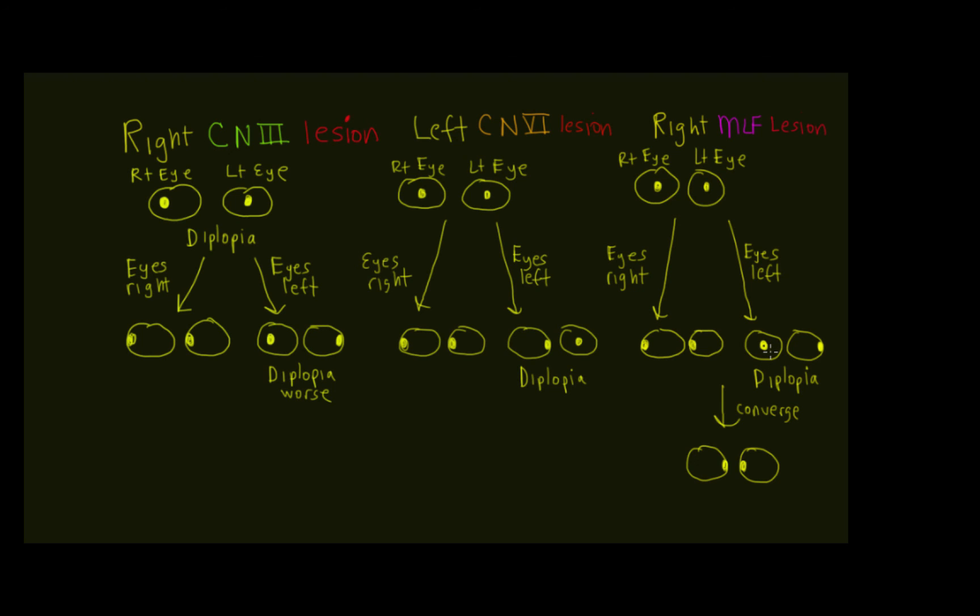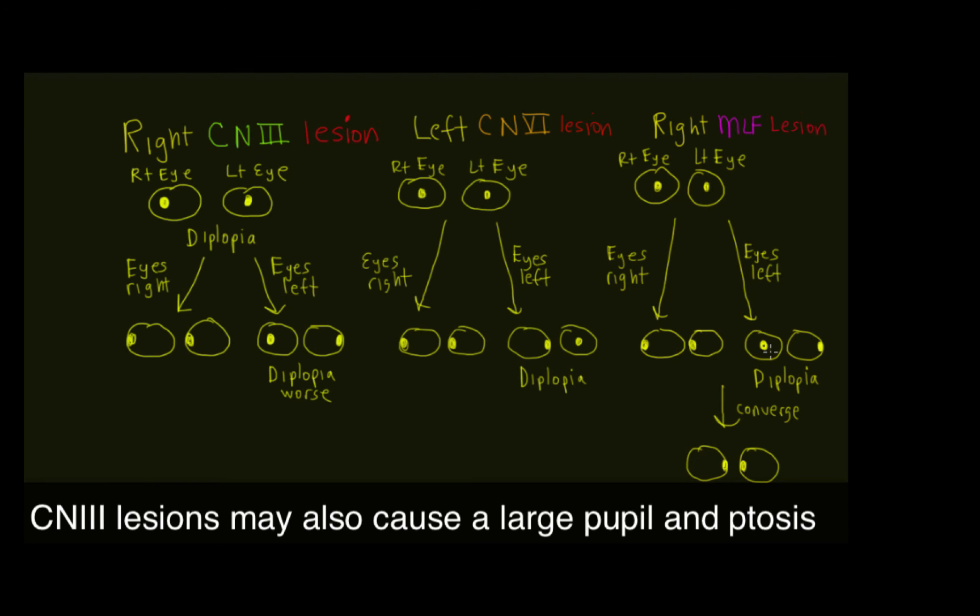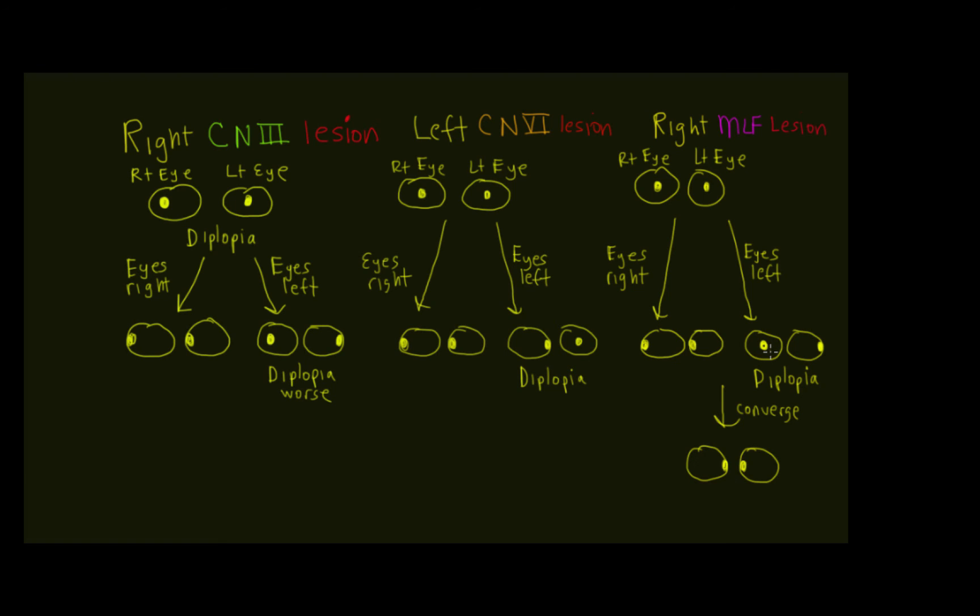Now, it's also important to consider, when you have these kinds of lesions, for example, in cranial nerve three, cranial nerve three does some other things. So we might expect that the pupil is large and poorly reactive to light. There might be some ptosis, and maybe even perhaps some neighborhood sign affecting the crus cerebri, causing a contralateral hemiparesis.